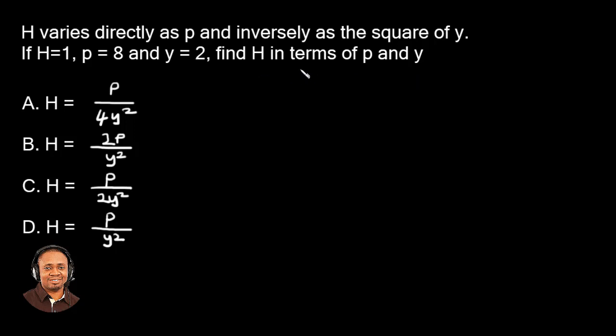So what this question is invariably asking us comes as seen from the answer option. That means we're going to find h in terms of p and y, just as it is. And with this, we're also given some important information in the questions. Like in the first sentence, we're told that h varies directly as p and inversely as the square of y.